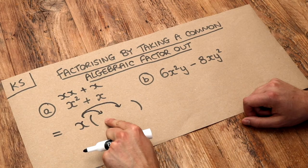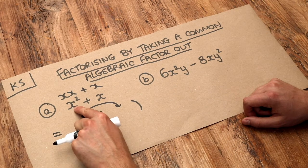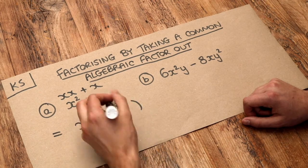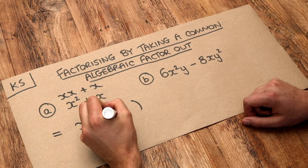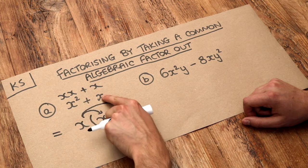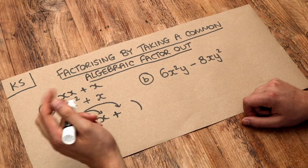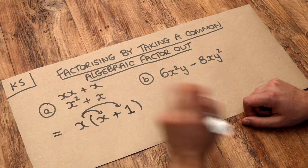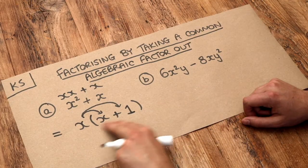So x times what would give you x²? Well it's x. x times x gives you x². And then let's put that plus in the middle. x times what would give you x? Well it's 1 isn't it? x times 1 would just be 1x which is just x. And we are done with this factorisation.